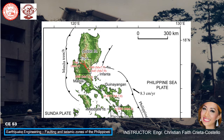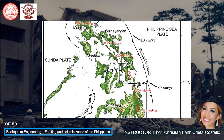Proceeding to the Visayas area, you can see the various islands: Masbate island, Guimaras, Leyte islands, and Mindanao islands. On the left side of Masbate island is the Sunda Plate, and on the right side of Guimaras is the Philippine Sea Plate. Nearby the Mindanao islands is the Sulu-Negros Trench.